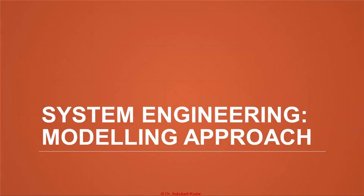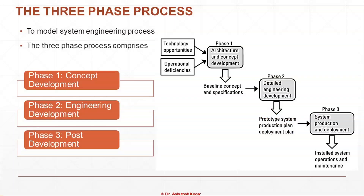The modeling approach for system engineering is a three-phase process. Phase one is concept development, with technology opportunities and operational deficiencies as input. Phase two is engineering development — the output of phase one is a baseline concept based on which we develop prototype systems, production plan, and deployment plan. Phase three is system production and deployment.